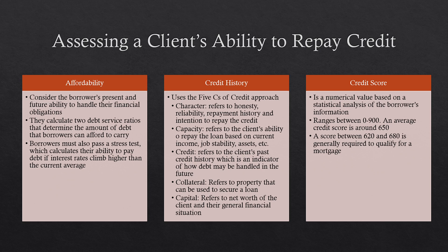Another thing financial institutions look at is credit history, using the five C's of credit: Character — honesty, reliability, and repayment history; Capacity — the client's ability to repay based on income, job stability, and assets; Credit — past credit history as an indicator of future behavior; Collateral — property that can secure the loan; and Capital — the net worth and general financial situation of the client.